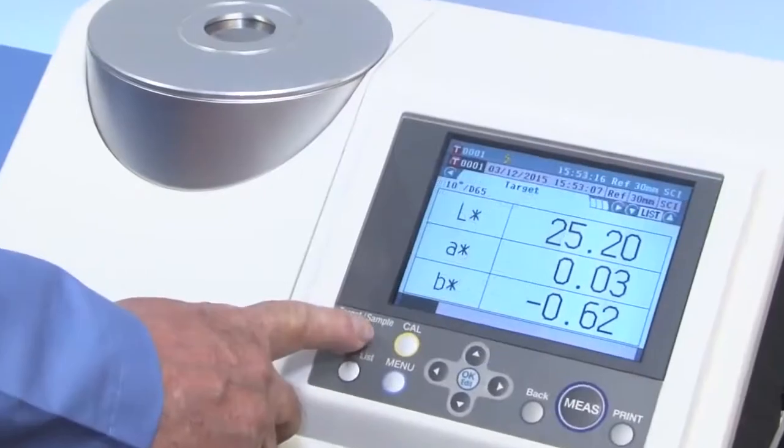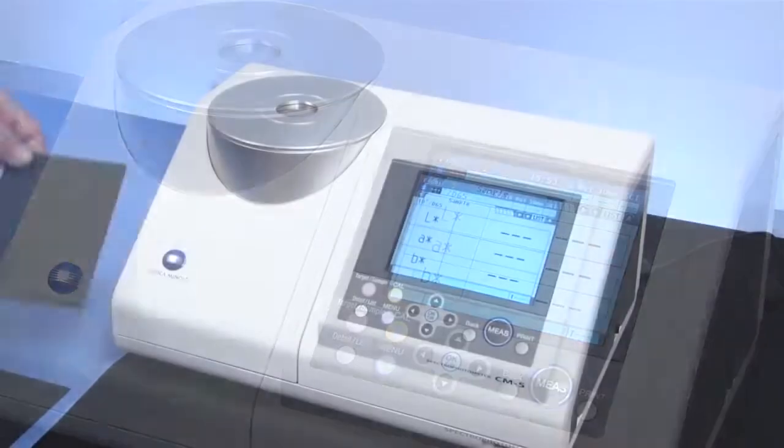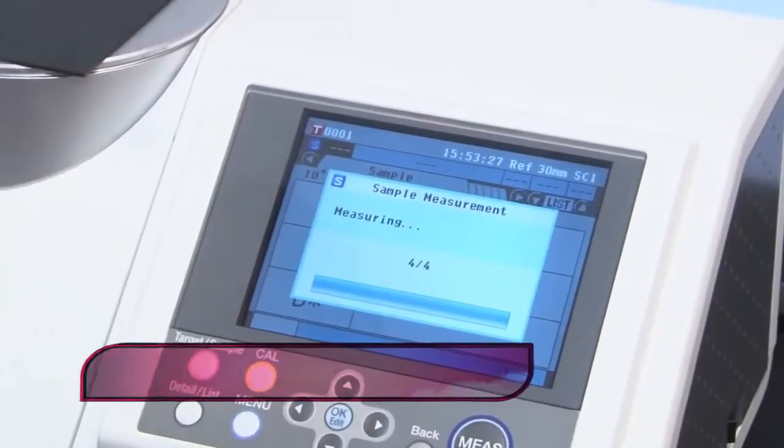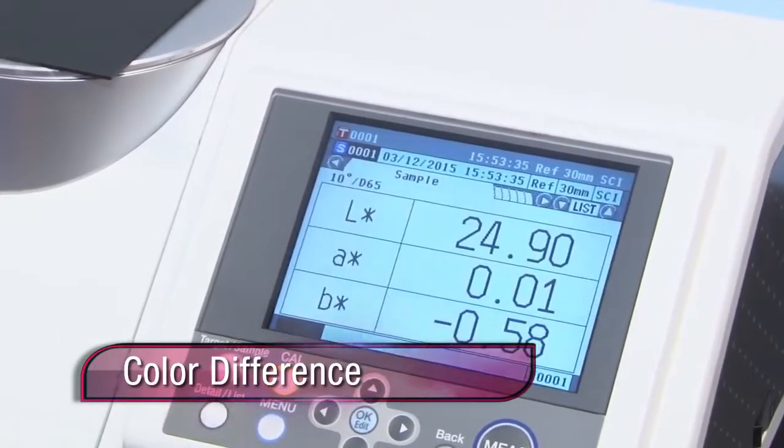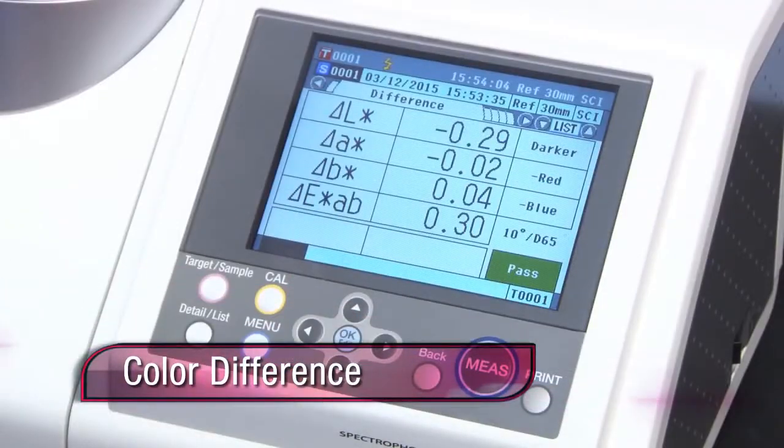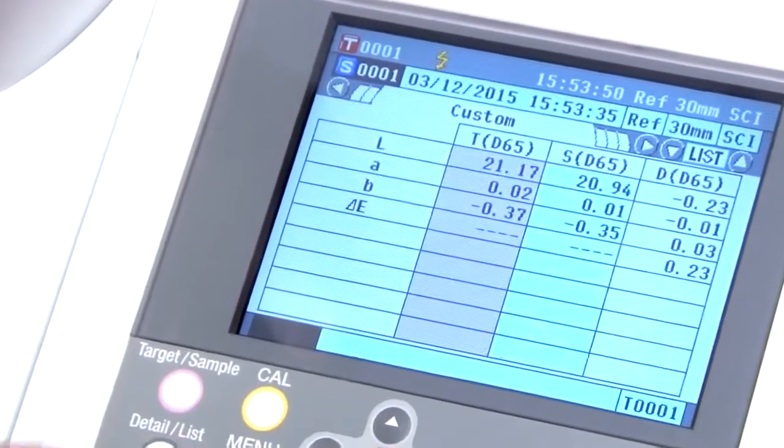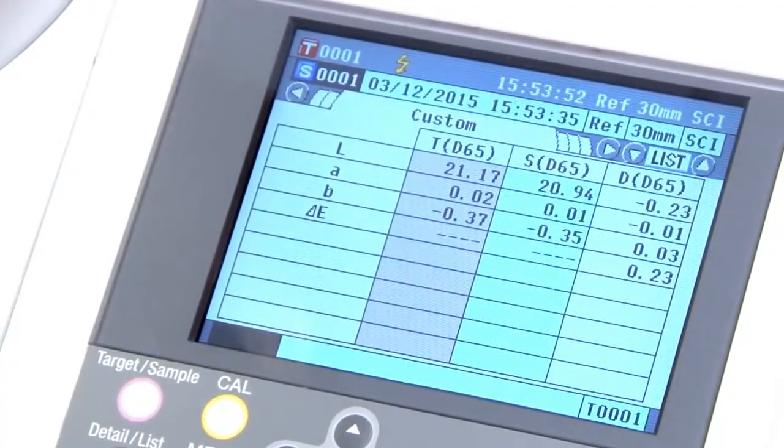For color difference, measure the sample color and the standard color. Then save the values for each measurement. The differences between the sample and standard are calculated using the resulting colorimetric values. Differences are shown numerically to identify color inconsistencies between products.